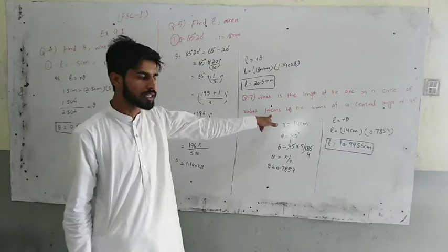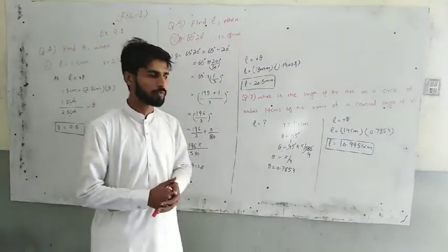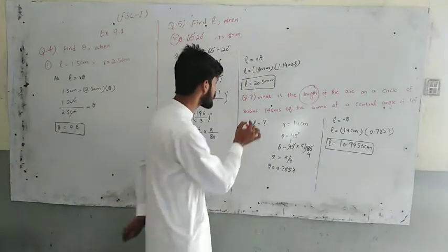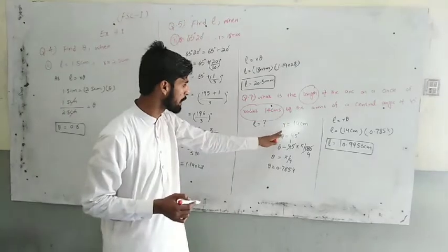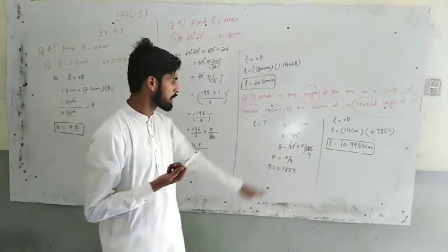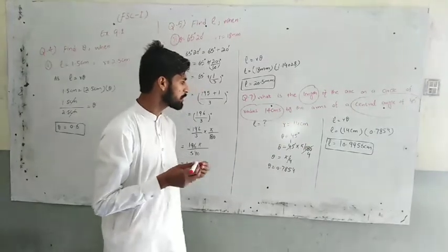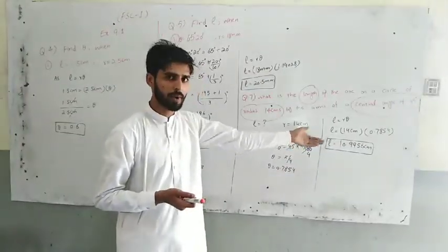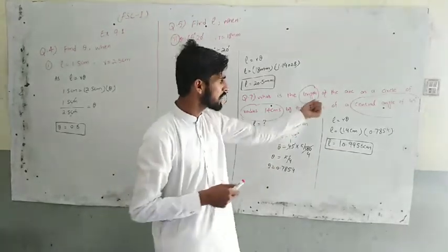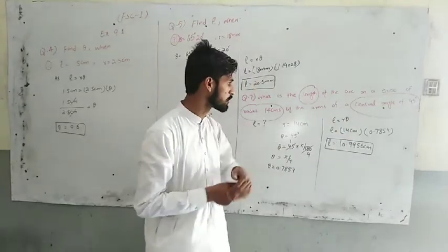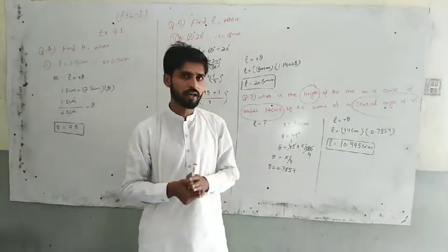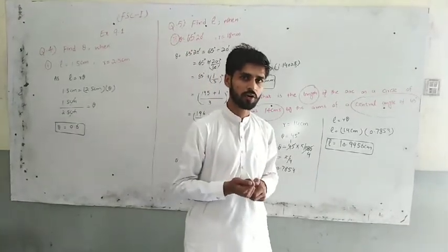Next question: which is the length of the arc on a circle of radius 14 cm with a central angle of 45 degrees? Using the formula, after simplification theta is 0.7854 radians. If you want to find L, L equals 14 cm multiplied by theta, which after simplification is 10.99 cm.